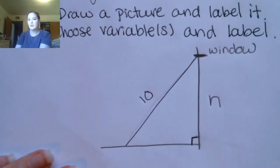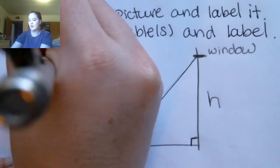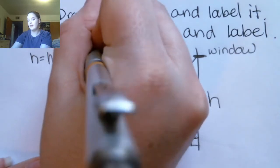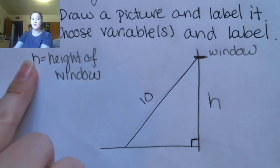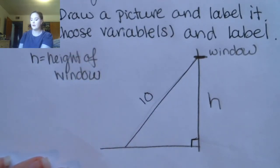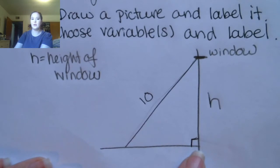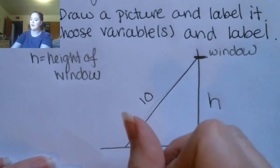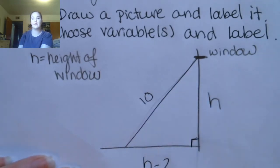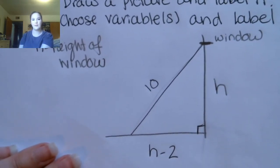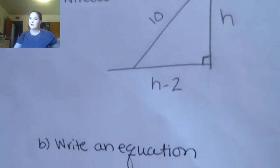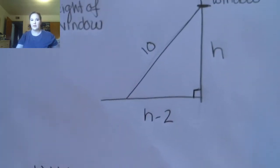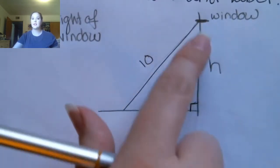I'm going to label the height as h, where h is the height of the window. The distance from the wall to the bottom of the ladder should be two feet less than the height of the window, so that side is h minus 2. That's my picture fully labeled. Part b says write an equation. When you look at this picture, you can see that this is a right triangle, so we're going to use the Pythagorean theorem.